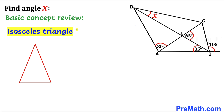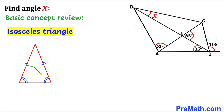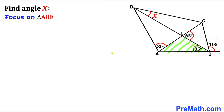Finally, let's talk about the isosceles triangle. As you can see in this diagram, two side lengths are congruent, and moreover the angles opposite to them are congruent as well. Now let's focus on triangle ABE.